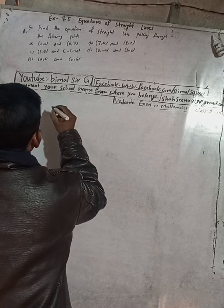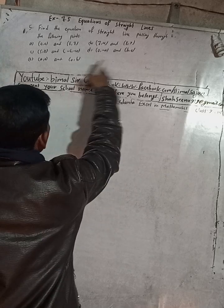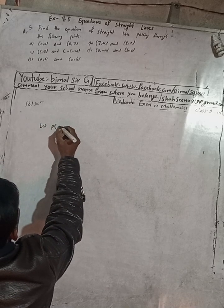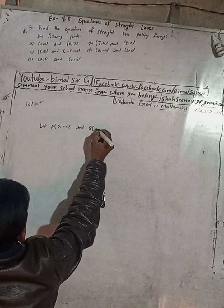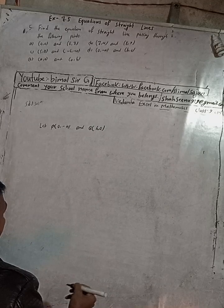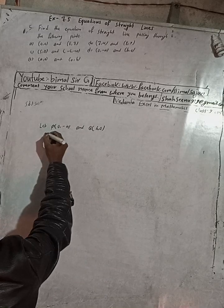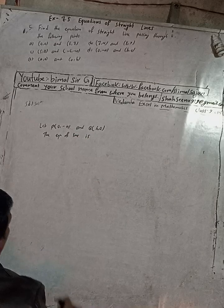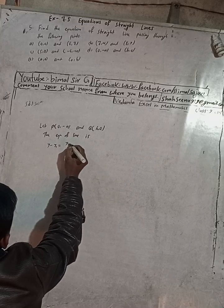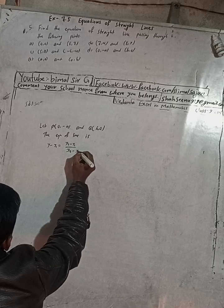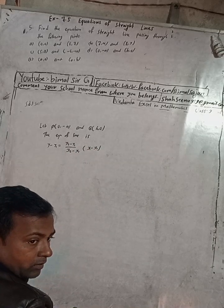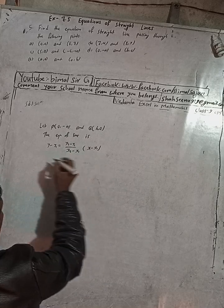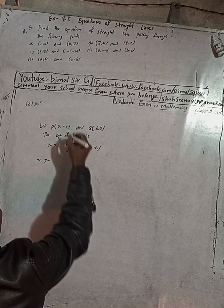For question 5d, let P be (0, -a) and Q be (b, 0). The equation of the line is y minus y1 equals (y2 minus y1) over (x2 minus x1), into (x minus x1).